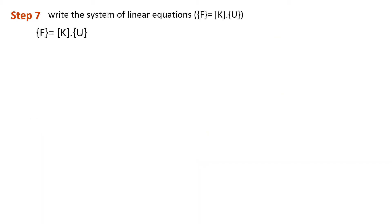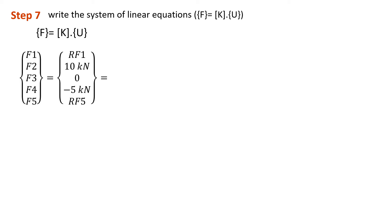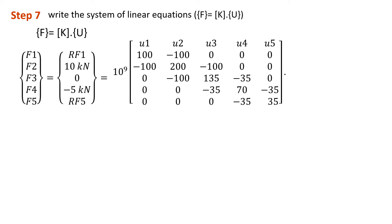The next step, step 7, is to write the system linear equation, which is F equals KU. We list down our F vector that we defined before, our global K matrix, and our unknowns — the degrees of freedom. This gives us our global system linear equations.